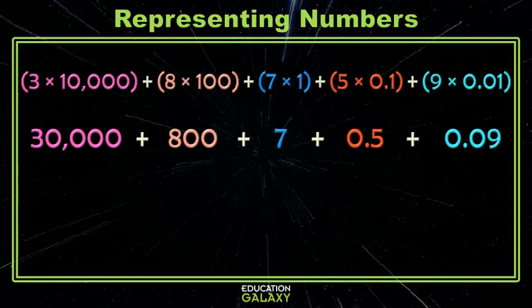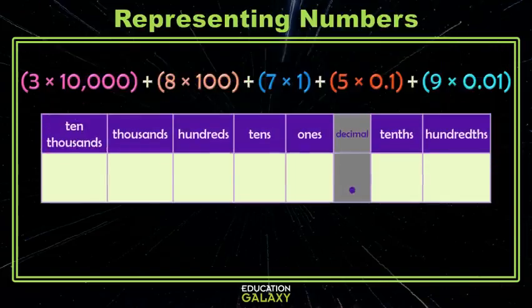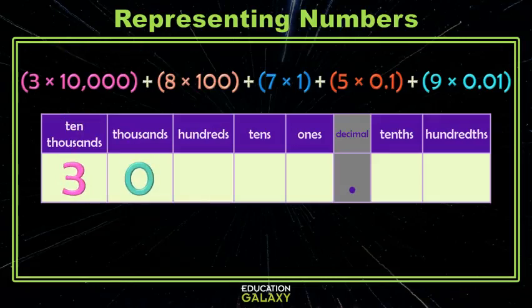Let's just consider our expanded notation in terms of place value. So I have 3 ten thousandths. I can just put a 3 in the ten thousandths place. I don't have anything that says times a thousand, so I don't have anything that goes in the thousands place. I can put a 0. In the hundreds, I have 8 times a hundred, so I have 8 hundreds. I don't have anything that says times 10, so I don't have any tens. I have 7 times 1, so that means I have 7 ones.